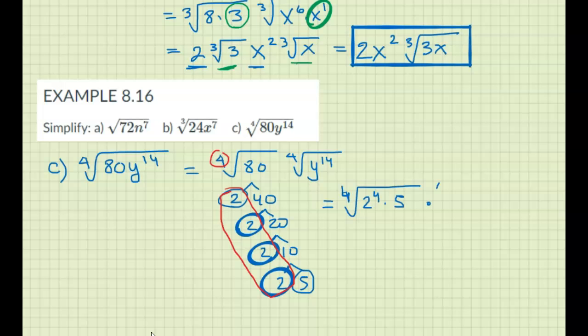Now with the y, fourth root. The 14 doesn't divide by 4, but 12 does. So I'm going to separate these as y to the 12 times y to the 2. Alright.